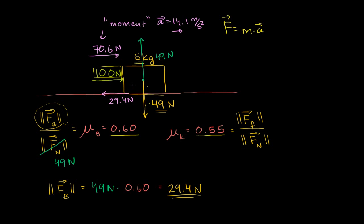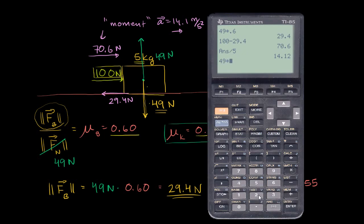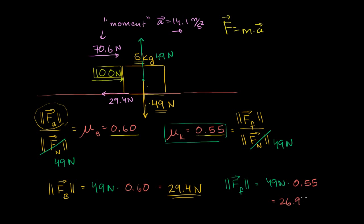Once the block is moving, we've gotten the surfaces out of their grooves and they're gliding past each other, though there's still resistance. Now the coefficient of kinetic friction applies. The normal force is still 49 newtons, so the kinetic friction force equals 49 newtons times 0.55, which gives 26.95 newtons. This is the magnitude of the friction force, and it always acts against our motion.